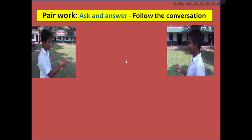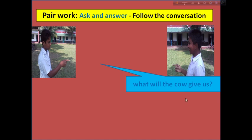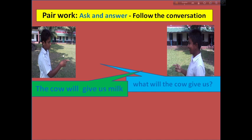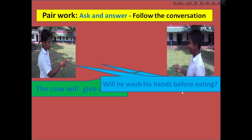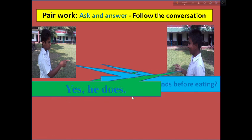Dear students, this is your peer work. You can see two pictures — two friends talking to each other. This boy asked: What will the cow give us? That boy answered: The cow will give us milk. This boy again asked: Will he wash his hands before eating? He replied: Yes, he will.